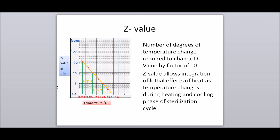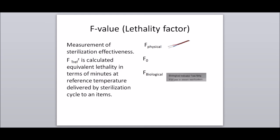Z value: the number of degrees of temperature change required to change the D value by a factor of 10. It is the integration of the lethal effects of heat as temperature changes during the heating and cooling phases of a sterilization cycle. F value, or lethality factor: a measurement of sterilization effectiveness. F subscript T-reference superscript Z is the calculated equivalent lethality in minutes at a reference temperature, delivered by a sterilization cycle to an item.